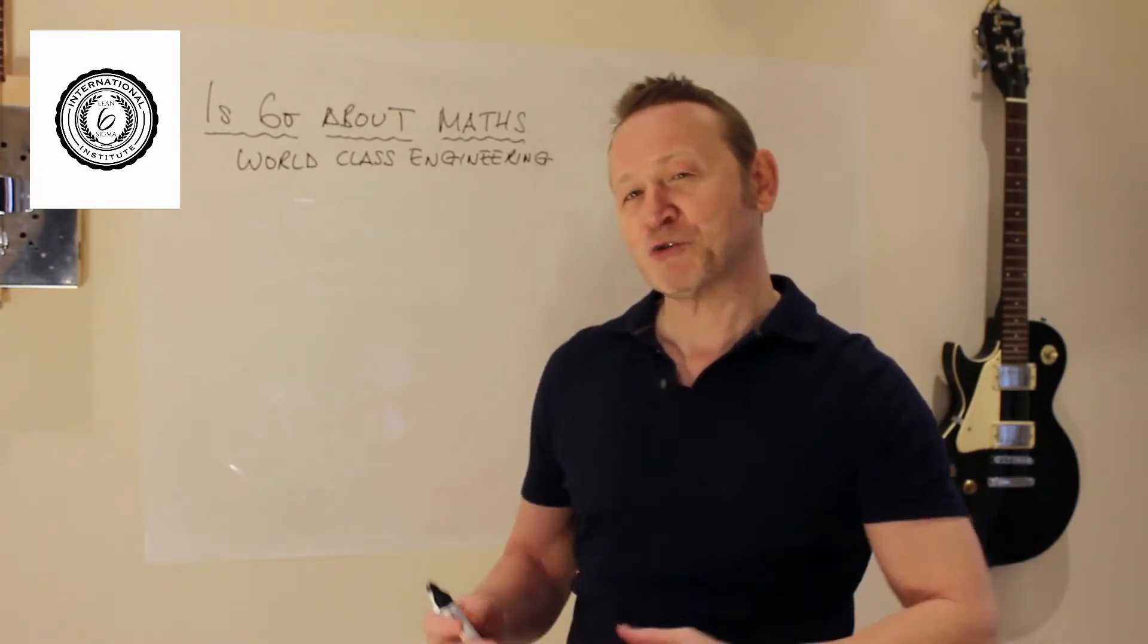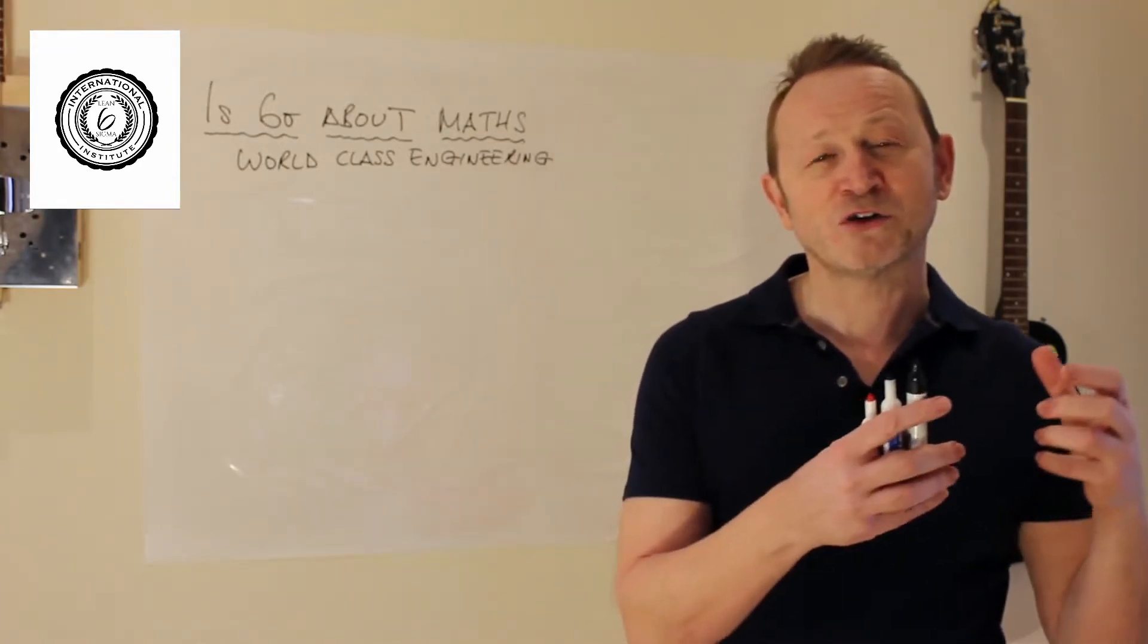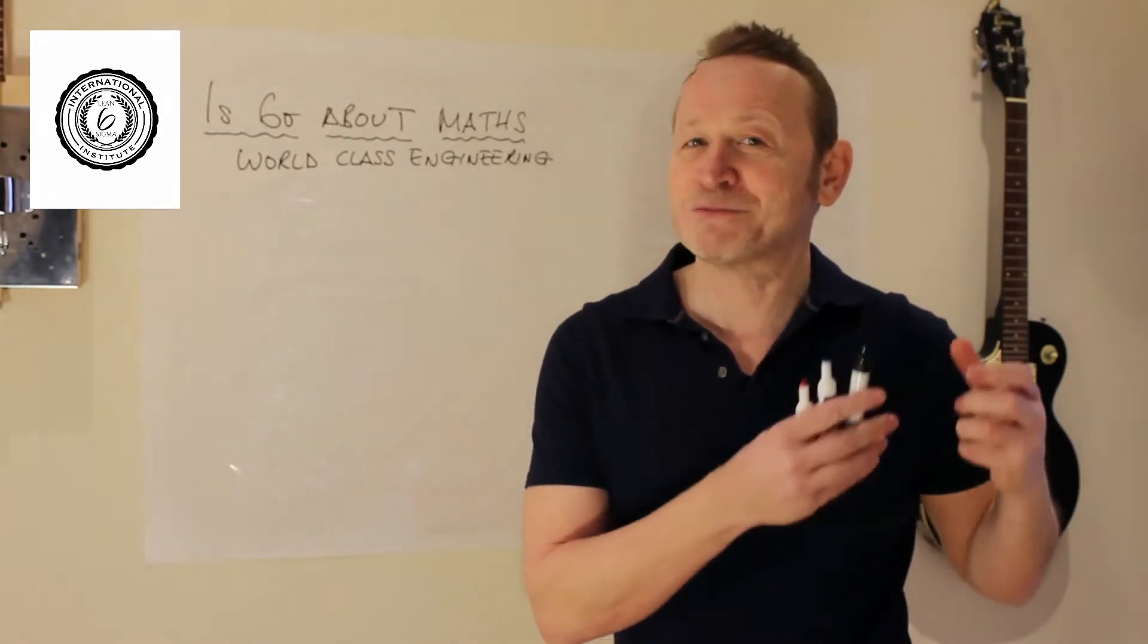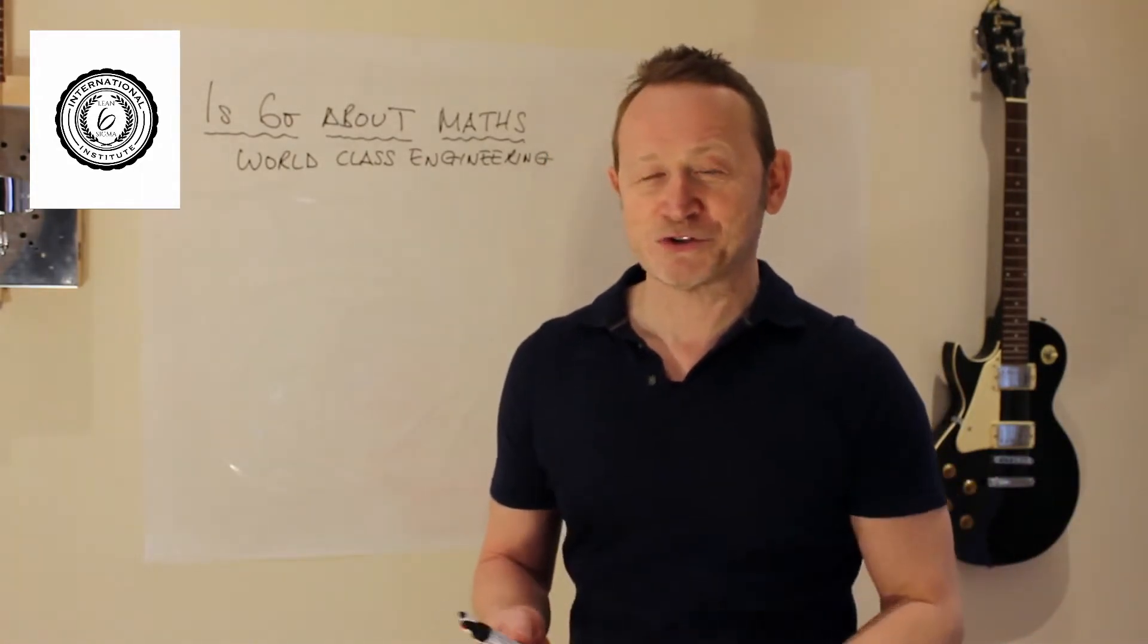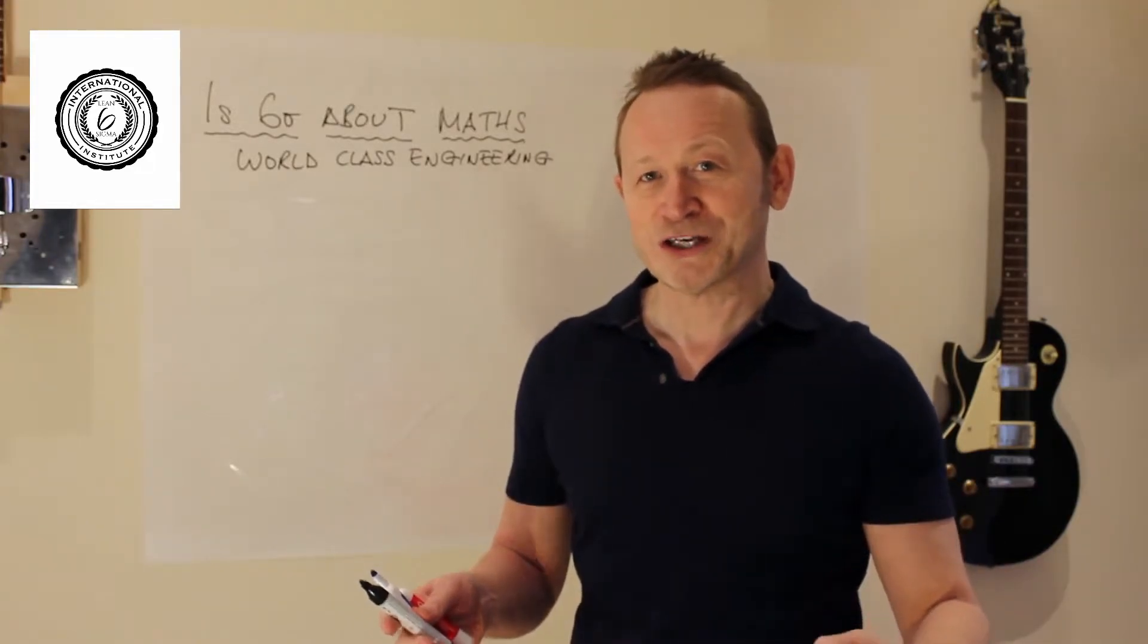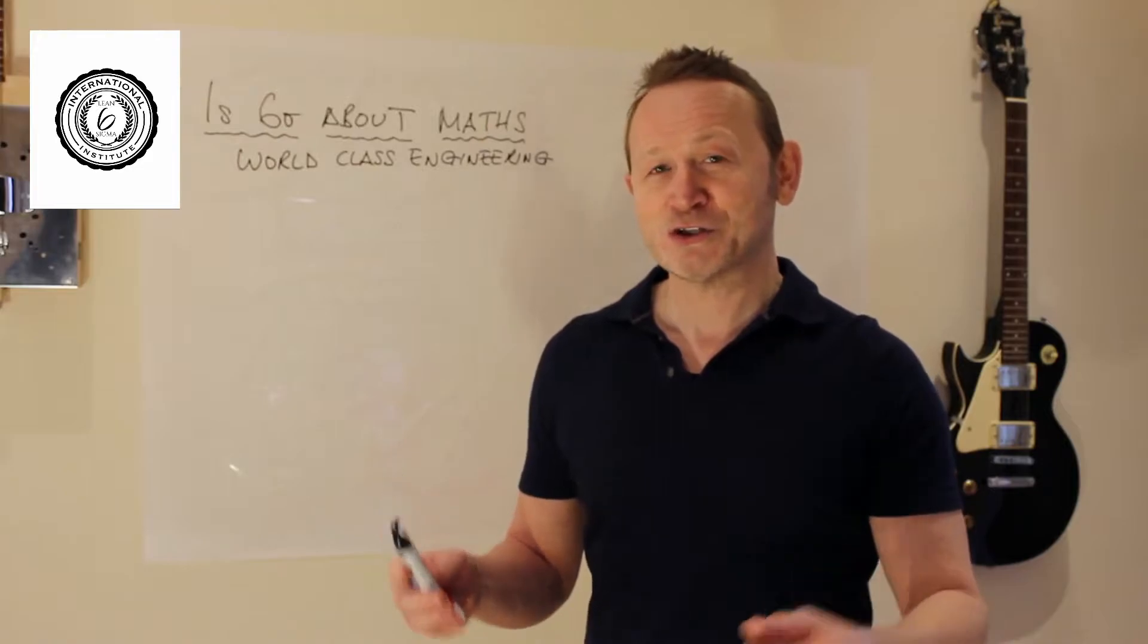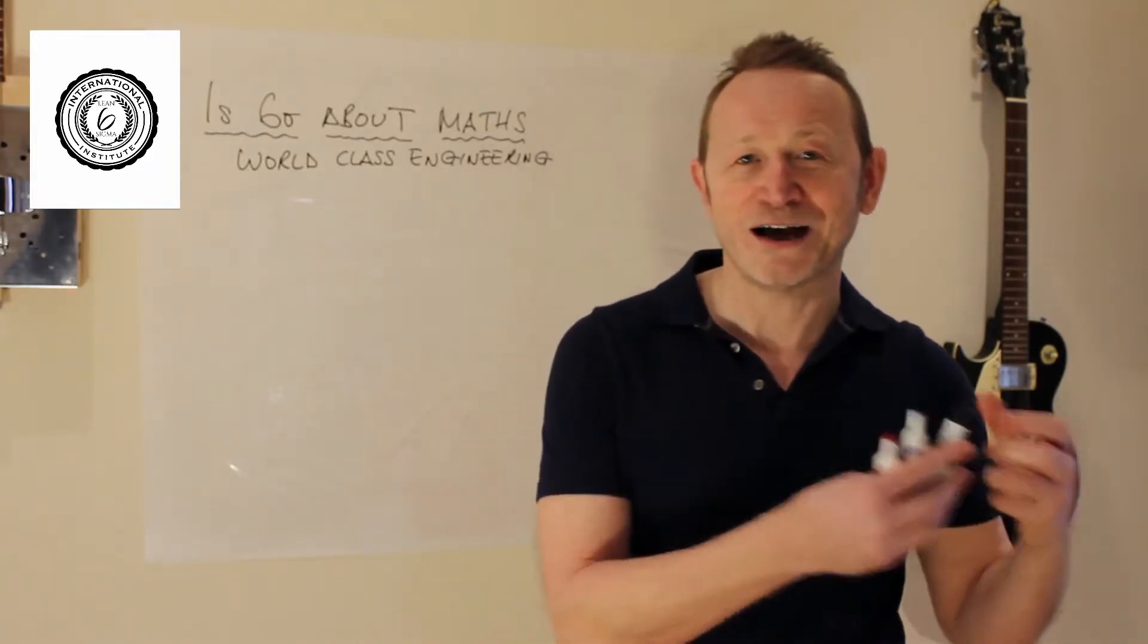I'm going to show you what the DMAIC cycle looks like when we're looking at mathematics light and what it looks like when we get mathematics heavy. Because there are times when you need to bring out some heavy mathematics to understand your process. But this is not the centrepiece necessarily of what Six Sigma is about. So we're going to take a look at the two DMAIC cycles with maths and without maths.